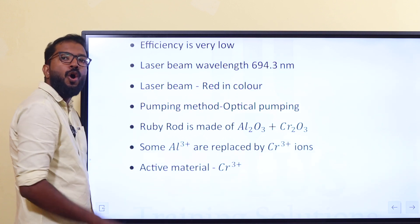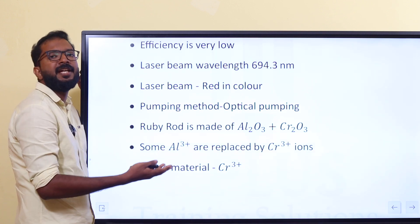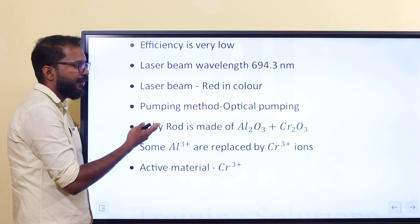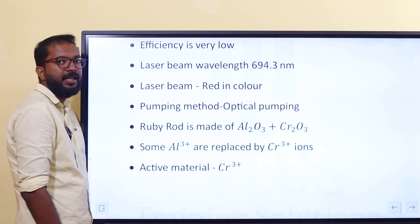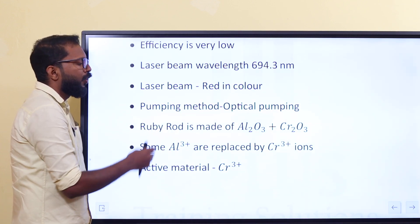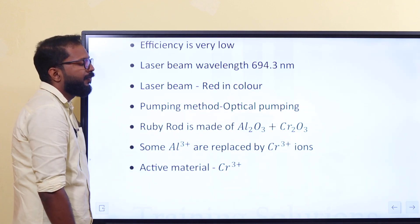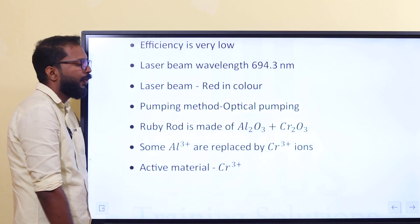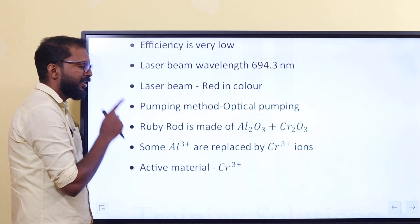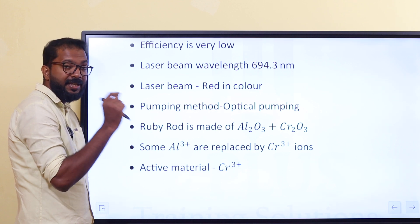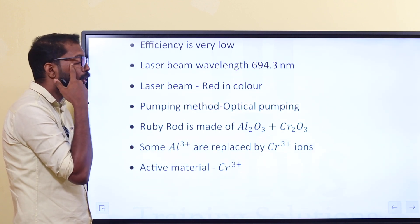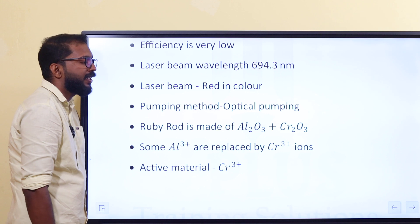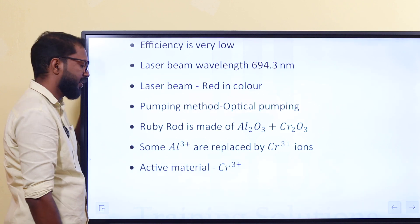The pumping method is optical pumping. The ruby rod is made from Al2O3 and Cr2O3.